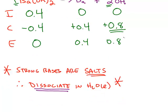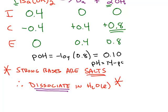So the goal was to find the pH and the pOH. We can find the pOH first. The negative log of hydroxide means the negative log of 0.8, which is 0.10. And the pH is 14 minus the pOH, which will be 13.90.